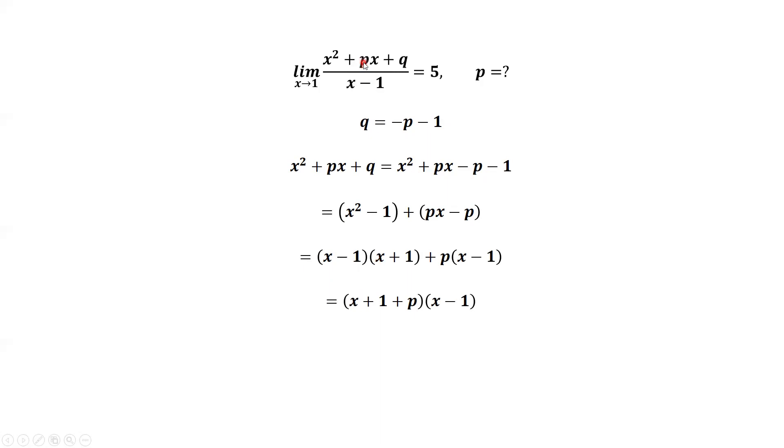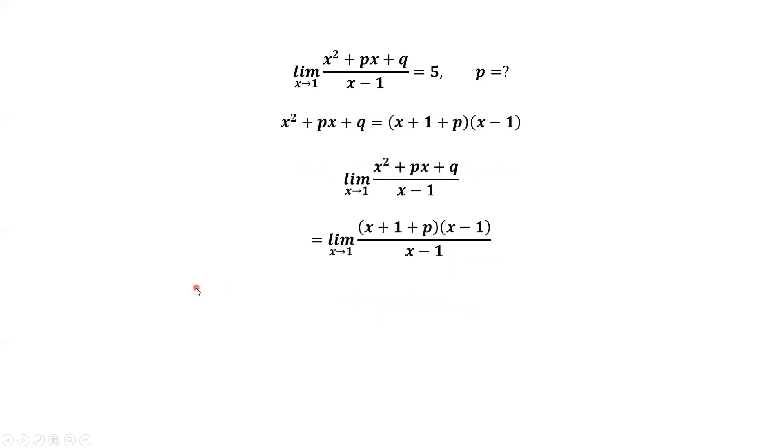In this limit, we replace the numerator by x plus 1 plus p times x minus 1. x minus 1 can be cancelled from both numerator and denominator. This implies the limit equals 2 plus p.